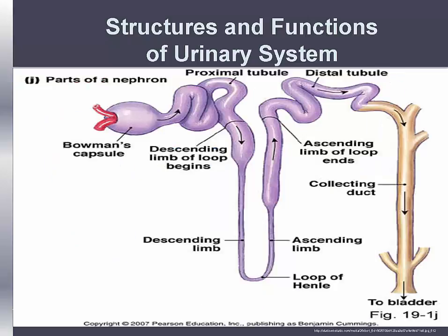Tubular function includes reabsorption, which is the passage of substances from the lumen of the tubules through the tubule cells and into the capillaries. The proximal convoluted tubule reabsorbs about 80% of electrolytes. The loop of Henle reabsorbs water; the descending loop reabsorbs water, some sodium, urea, and other solutes. The ascending loop reabsorbs chloride and sodium. Tubular secretion is the passage of substances from the capillaries through the tubular cells into the lumen of the tubule.